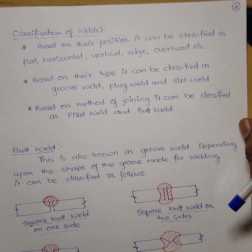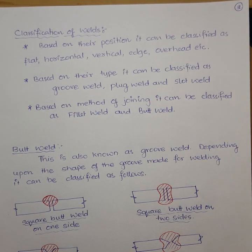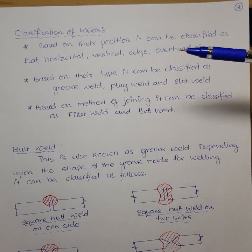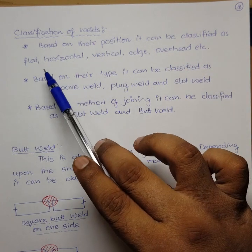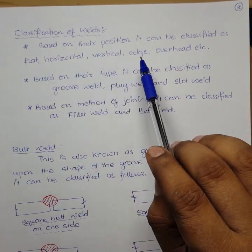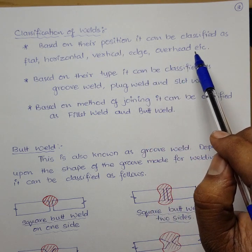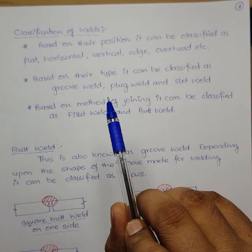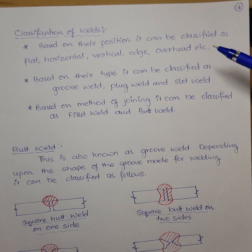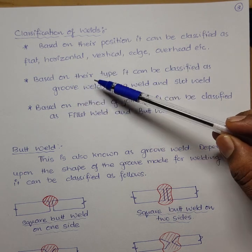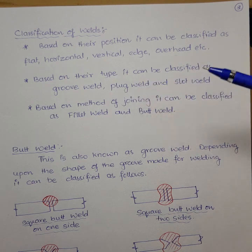Coming to the classification of welds — welds can be classified first based on their position: flat, horizontal, vertical, edge, or overhead. For example, if you are welding two pieces in a vertical direction then it is a vertical weld; if you are joining two metals in a horizontal direction then it is a horizontal weld.